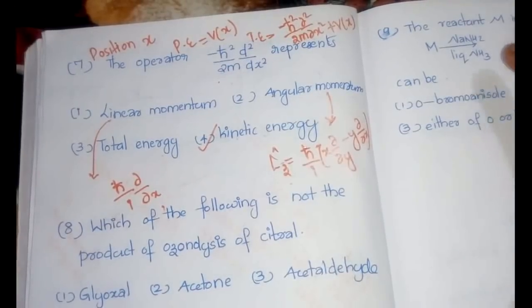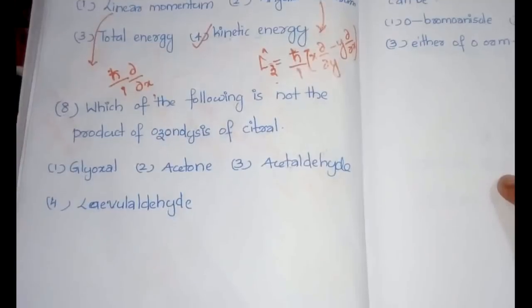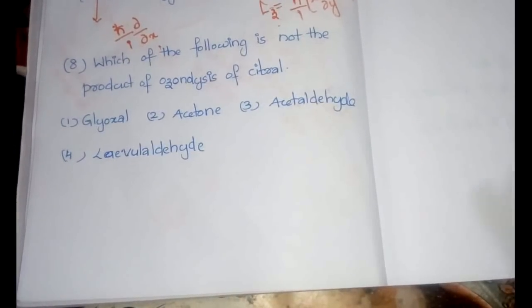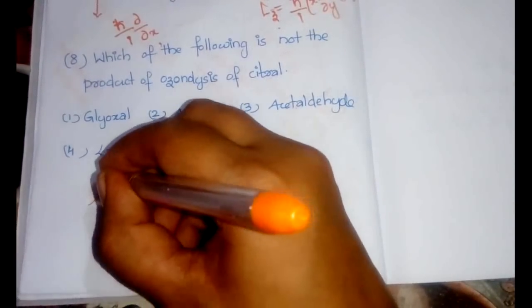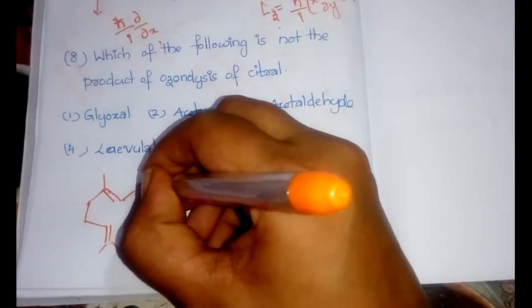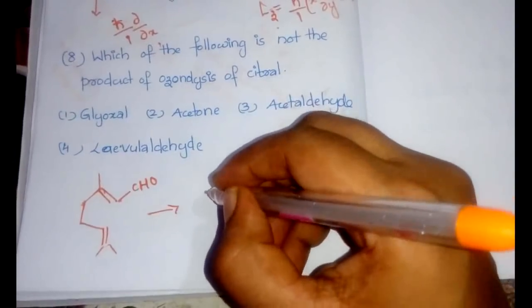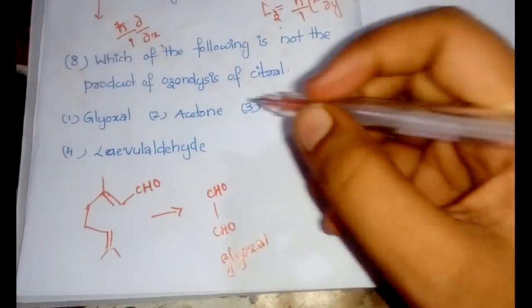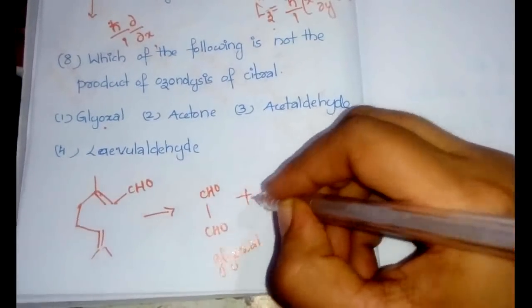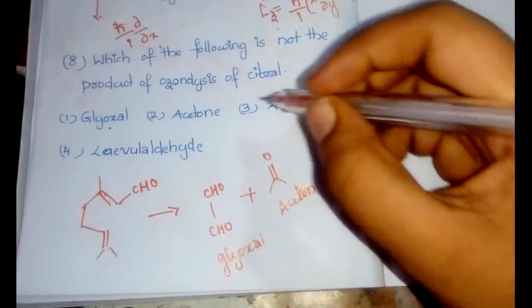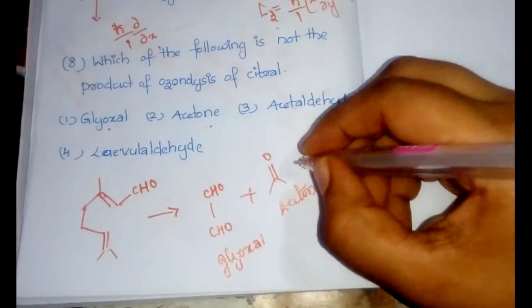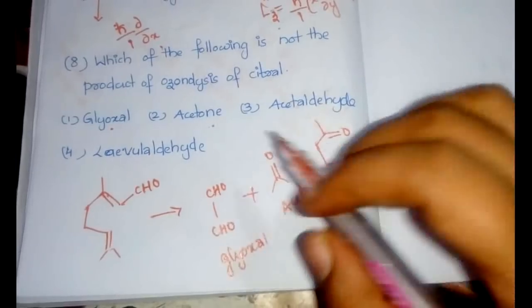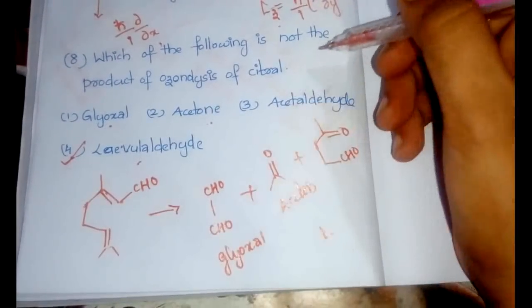The next question: which of the following is NOT a product of ozonolysis of citral? The structure of citral is drawn. After ozonolysis, three major products are formed: glyoxal, acetone (option 2), and levaldehyde.